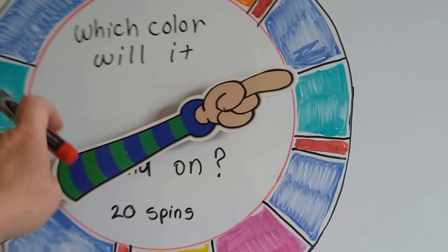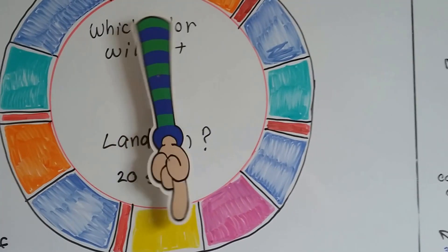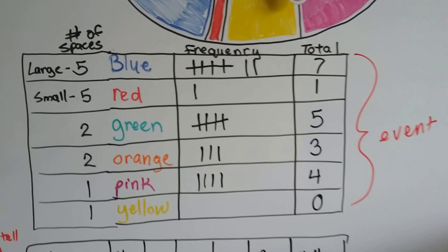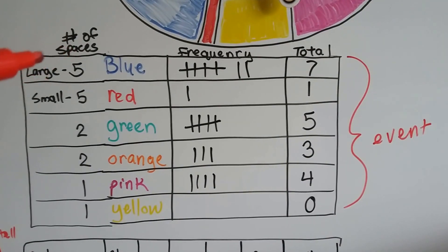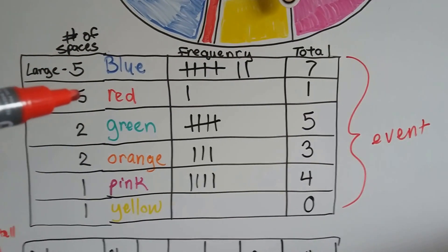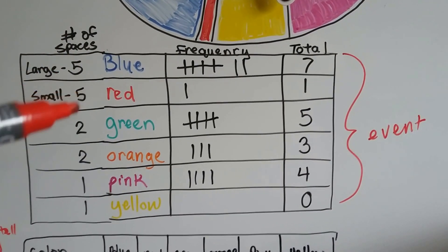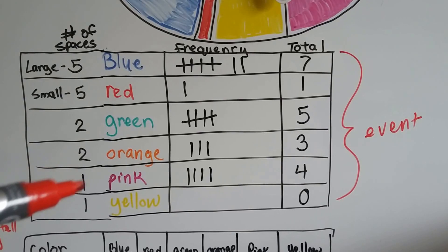I did this 20 times, and I marked it down, and here's what I got. Here's the event. Here's the number of spaces. There's five large and five small red. There's five large blue, five small red. There's two green, two orange, one pink, one yellow.